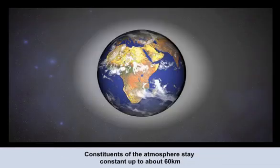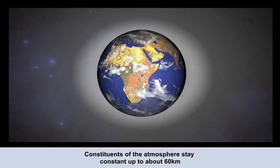The relative amounts of the gases stays fairly constant up to about 60 kilometres above the Earth. Thereafter, gravitational separation alters the composition of the atmosphere. However, there are other changes, primarily in temperature, that allow us to structure the atmosphere into segments.